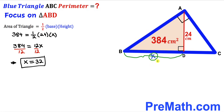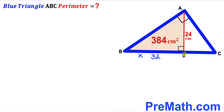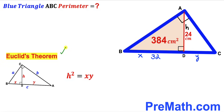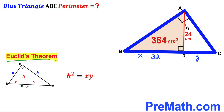Now our task is to calculate segment CD length as well. I'm going to label CD as y and the perpendicular AD as height h. Let's recall Euclid's theorem, focusing on right triangle ABC with perpendicular AD, where AD is labeled height h, BD is x, and CD is y. According to Euclid's theorem, h² = x × y.